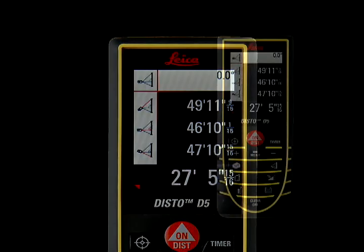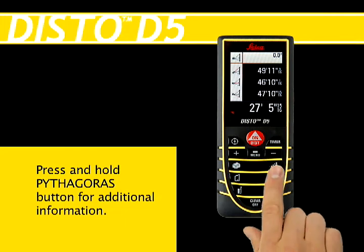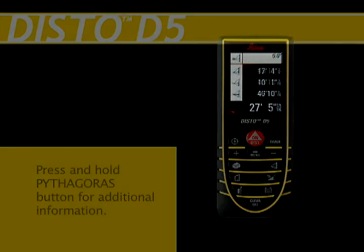Note: additional information can be calculated by pressing and holding the Pythagoras button until it beeps. The information, along with the corresponding descriptive icon, will be displayed.